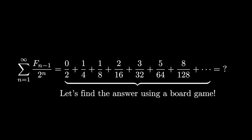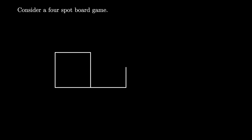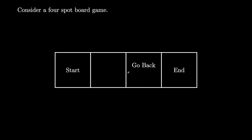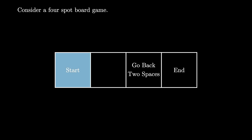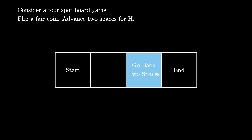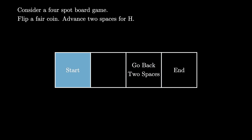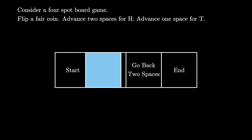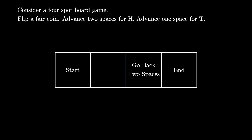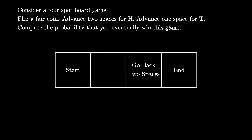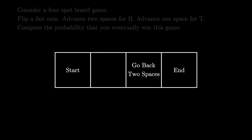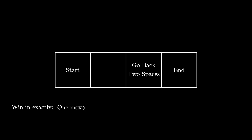Let's check that proof out. The board in our board game is a linear array of four squares. The first square counts as the starting square and the last square is the ending square. The second-to-last square tells us we must go back two spaces. In each round we flip a fair coin: we advance two spaces if we flip heads, and one space if we flip tails. We win the game once we land on the ending square. We want to compute the probability that we will eventually win.